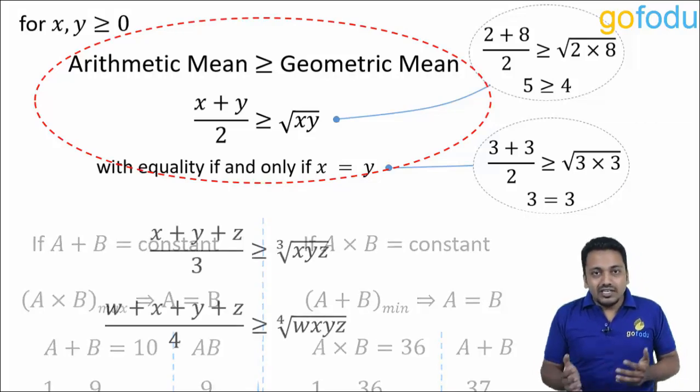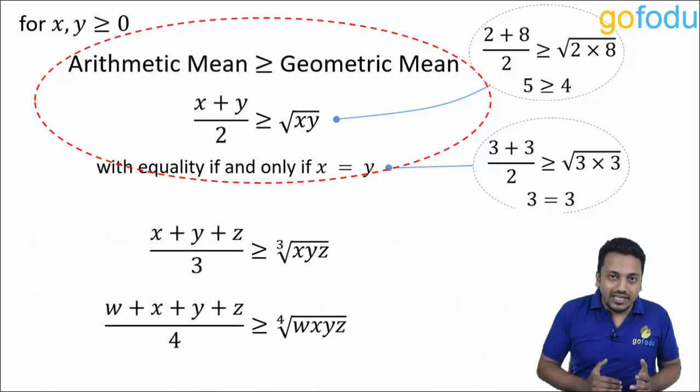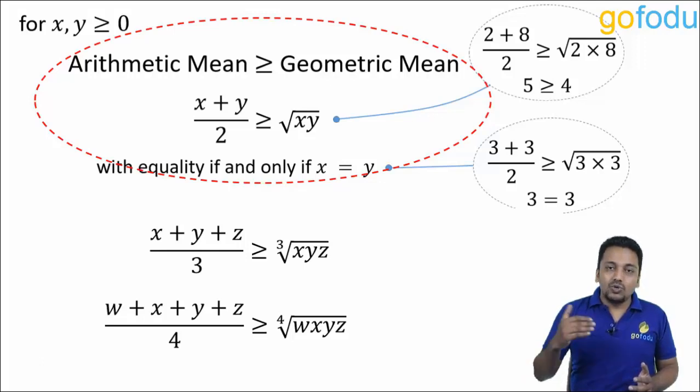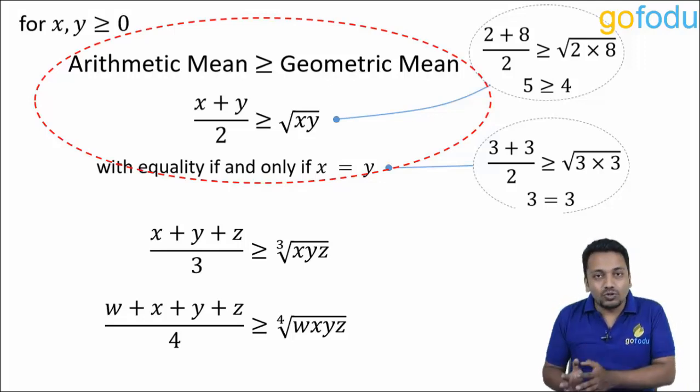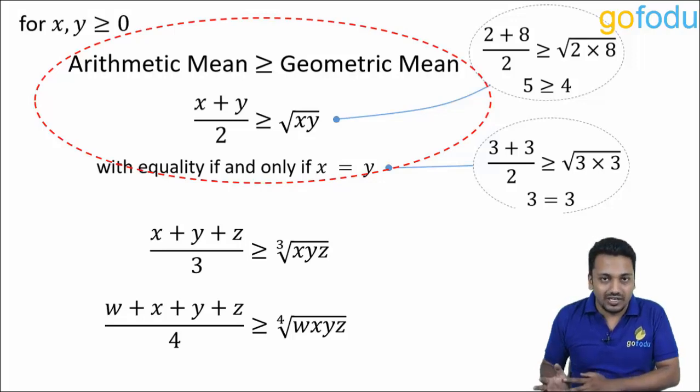Now if there are 3 numbers, x plus y plus z upon 3 will be greater than or equal to cube root of x, y, z. For 4 numbers, we'll divide the sum by 4 for arithmetic mean and we'll take the 4th root of their product for geometric mean. Again, AM will be greater than GM, greater than or equal to GM.